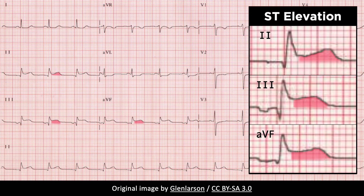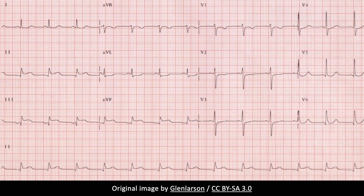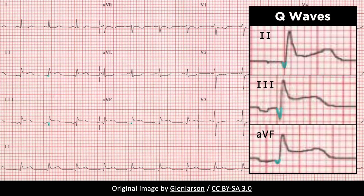With an inferior STEMI, elevation of the ST segment by 0.1 mV or greater occurs in two contiguous inferior leads, including leads 2, 3, and AVF. Pathologic Q waves may also be present in these same inferior leads. If present, the Q waves are usually minimally abnormal in the first 24 hours.